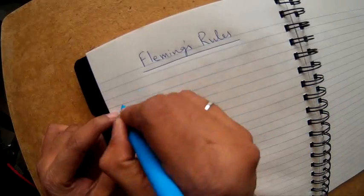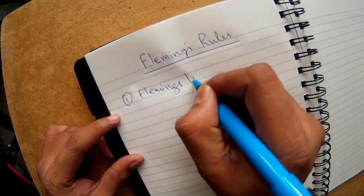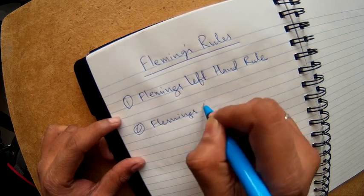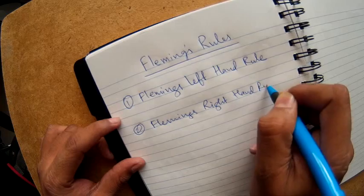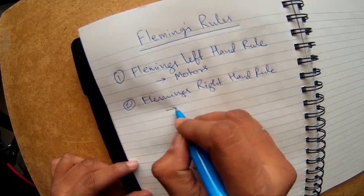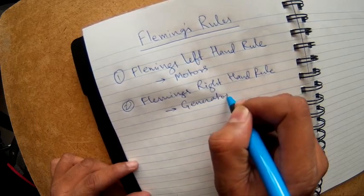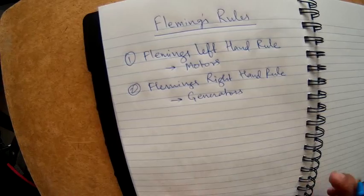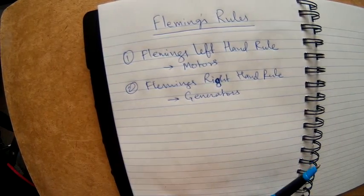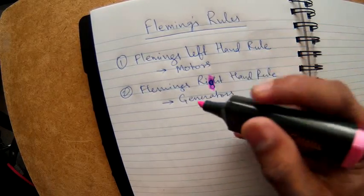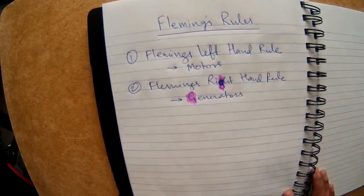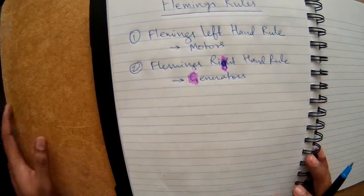There are two rules: Fleming's left hand rule and Fleming's right hand rule. The left hand rule is applicable for motors and the right hand rule is applicable for generators. To remember this, notice that in 'right' you find the letter G, which stands for generators. So the right hand is for generators and the left hand is for motors.